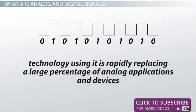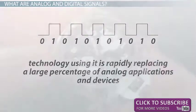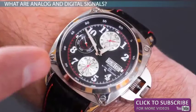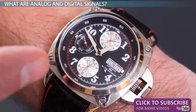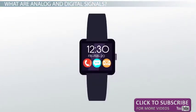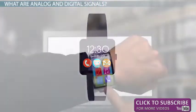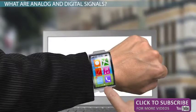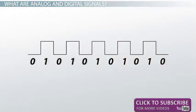Because of the inherent reliability of the digital signal, technology using it is rapidly replacing a large percentage of analog applications and devices. For example, the wristwatch showing the time of day with its minute, hour, and sweeping second hands is being replaced by the digital watch, which offers the time of day and other information using a numerical display. A typical digital signal is represented in the following image. Note the equally dispersed ones and zeros.